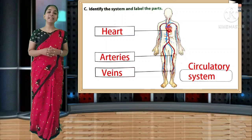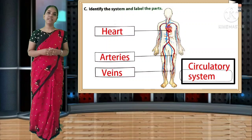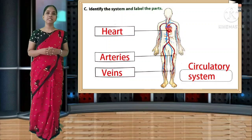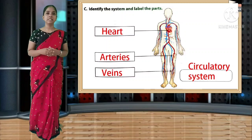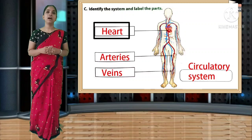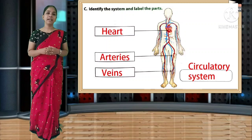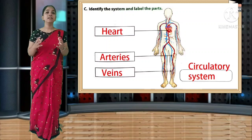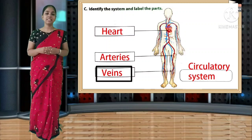Identify the system and label the parts. It is the circulatory system. Spelling: C-I-R-C-U-L-A-T-O-R-Y. The first part is heart, spelling H-E-A-R-T. The second part you can see is arteries, spelling A-R-T-E-R-I-E-S. The next part is veins.